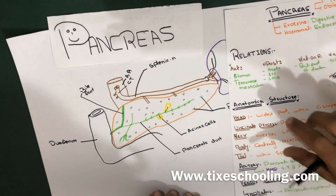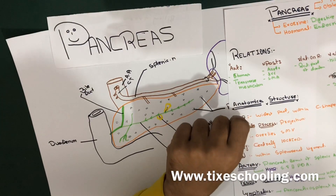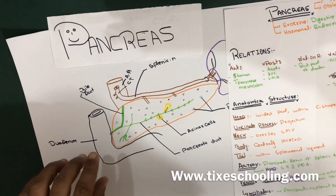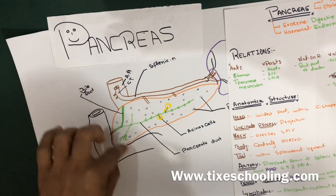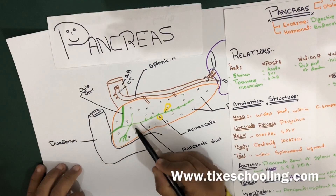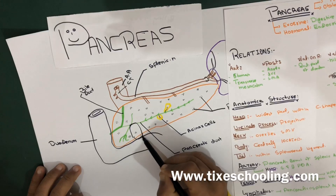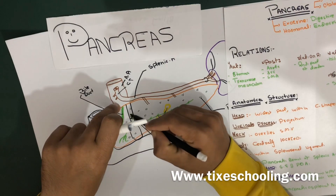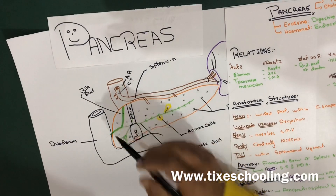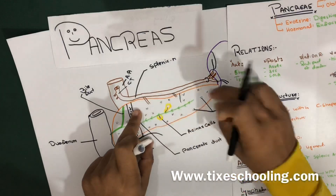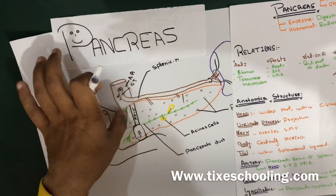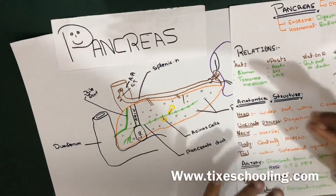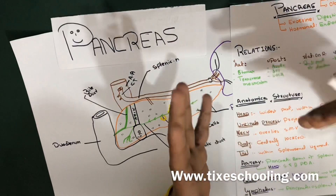The anatomical structure of the pancreas is divided into the head, uncinate process, neck, body, and tail. The head is the widest part shown here in blue. The uncinate process is the part that hangs slightly downward from the lower head. The neck is above the uncinate process, then the body, and finally the tail.